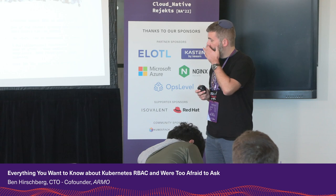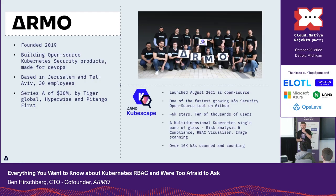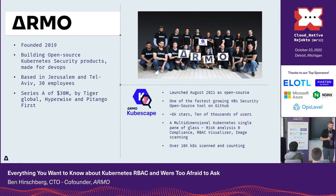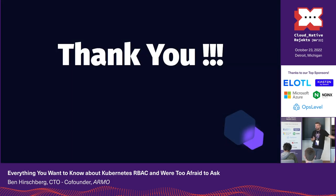We are the KubeScape team from Armo. In KubeScape we're investing a lot in how to manage RBAC, both from the CLI — finding out issues around RBAC — and the visualization tool we have on the KubeScape Cloud site is really neat. I suggest you have a look at it, and if you have any questions, I'm here afterwards.